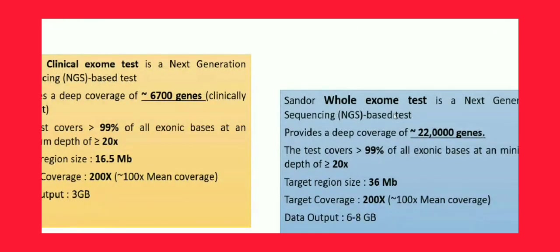For whole exome sequencing, we are sequencing approximately 25,000 genes. The target size is 36 MB, target coverage is 200x, and we are generating approximately 8 GB of data. Regarding a previous question about 30 GB — we generate 30 GB when doing whole genome sequencing. But 30 GB is not sufficient for whole genome sequencing; we have to minimally generate at least 90 GB of data if you really want good data.